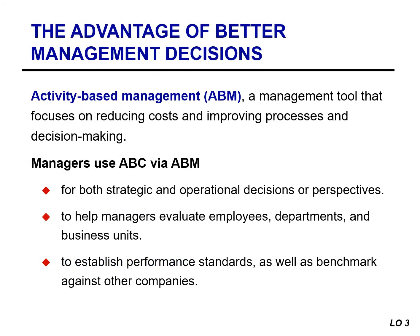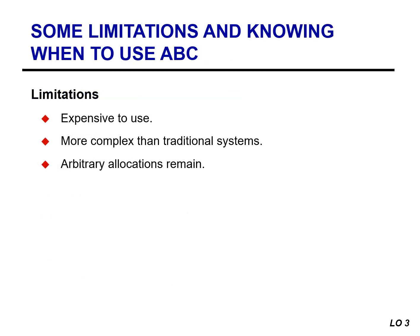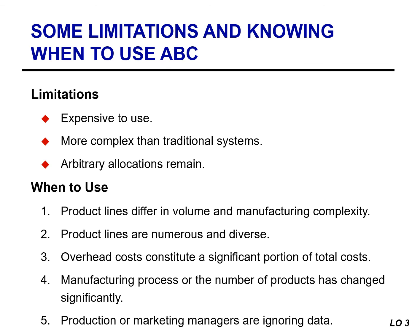Activity-based management is a tool that focuses on reducing cost and improving processes and decision making. ABC can be very beneficial, but it's not without its limitations. ABC can be expensive to use — the increased cost of identifying multiple activities and applying numerous cost drivers discourages many companies from using it. ABC systems are also more complex than traditional systems. And lastly, ABC does not offer complete accuracy as some arbitrary allocations remain. Despite these limitations, the presence of one or more specific factors would point to possible use of ABC.